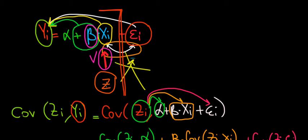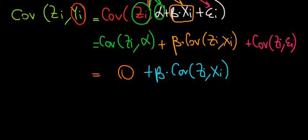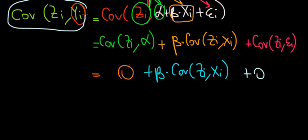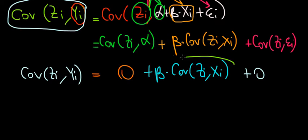The instrumental variable must not have an effect on the error term, so they cannot move together — that covariance becomes zero as well. So we're still calculating the covariance between the instrumental variable and y. The covariance between z and y is equal to beta times the covariance of z and x.